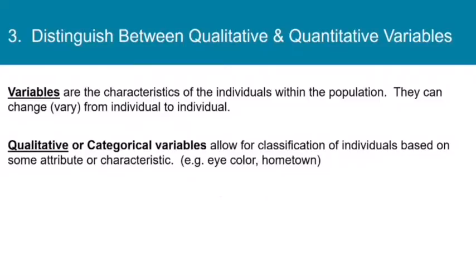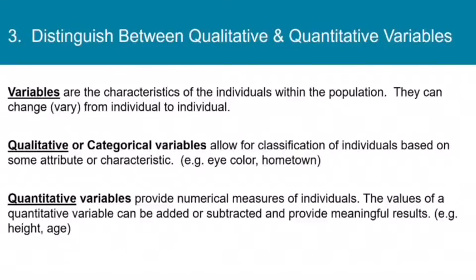So variables come in two basic types. A variable can be qualitative, meaning it's a categorical variable that allows for classification of individuals based on some attribute. Or it can be quantitative. In other words, it can provide numerical measures of individuals. The values of a quantitative variable can be added or subtracted and provide meaningful results. For example, height and age. You can add two heights together, or you can subtract two heights to compare them. You can subtract two ages to compare them. You could not add or subtract two eye colors. So you see the difference? Usually, qualitative is some kind of categorical data. Quantitative is numerical.